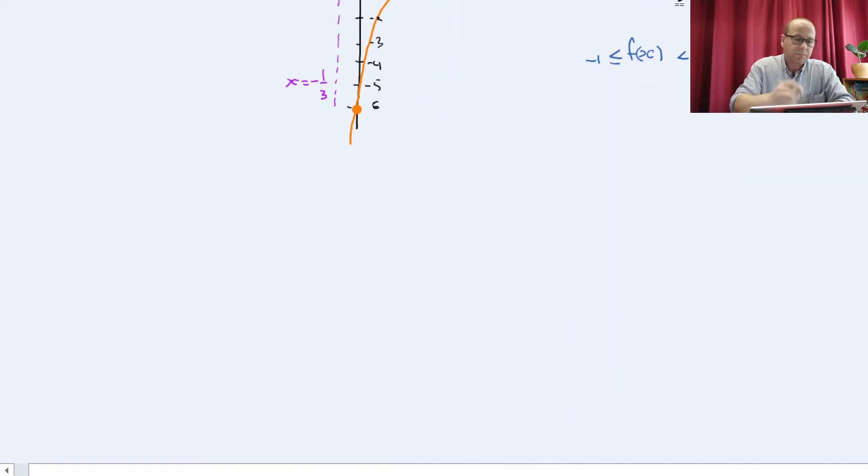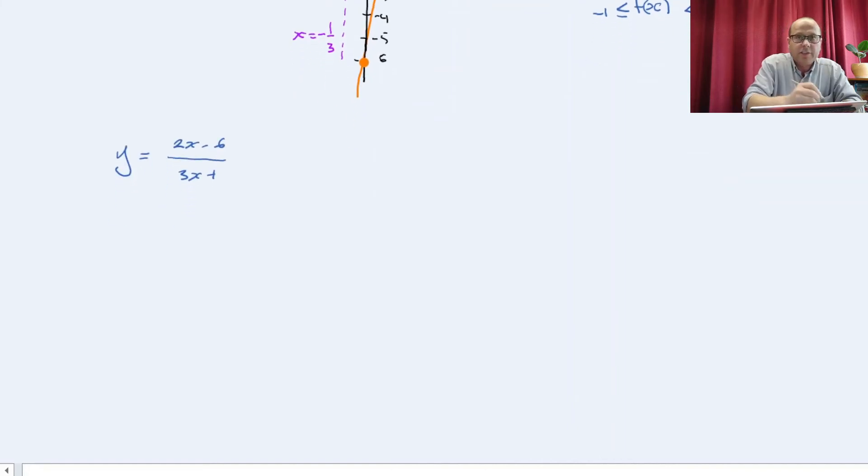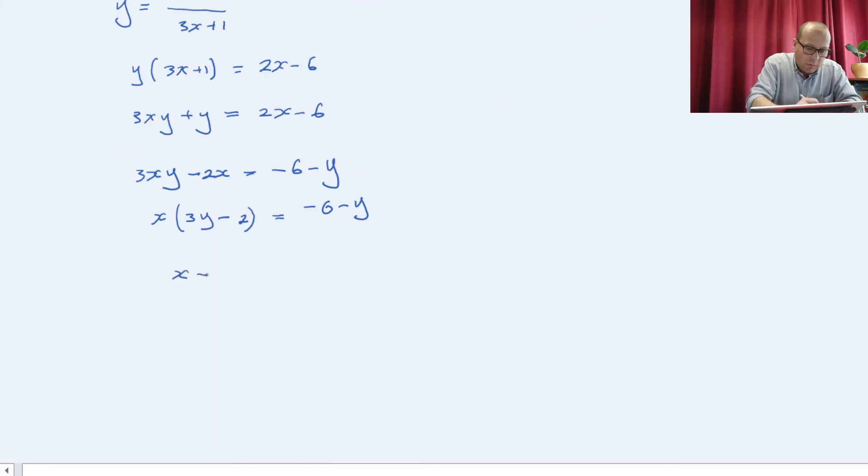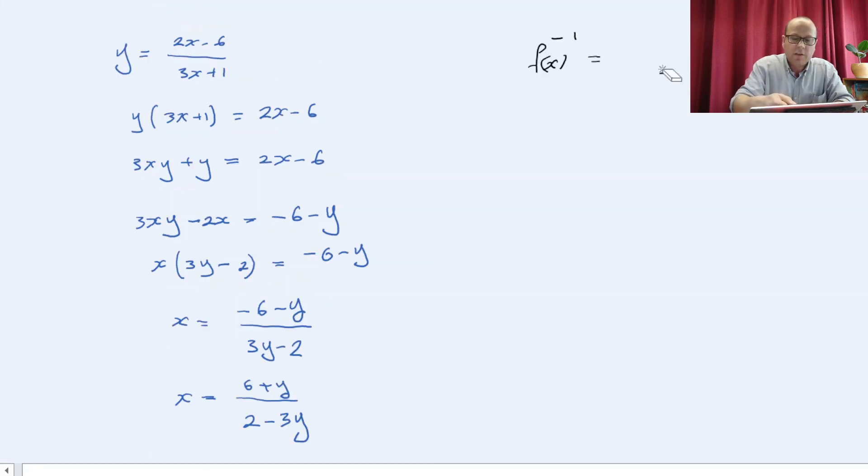Let's find the inverse of that function. I rearrange that function to make x the subject. So, x equals minus 6 minus y over 3y minus 2. x equals 6 plus y over 2 minus 3y. The inverse function is 6 plus x over 2 minus 3x.